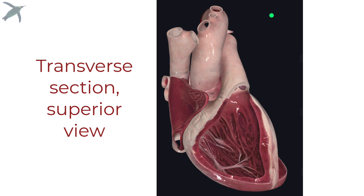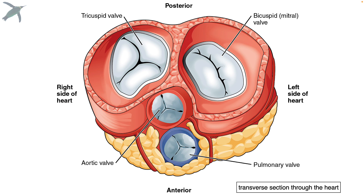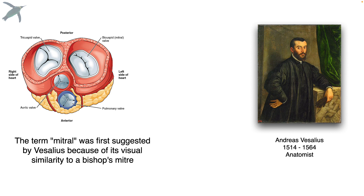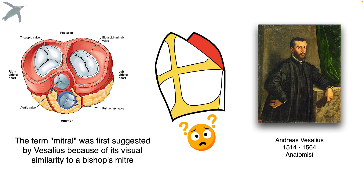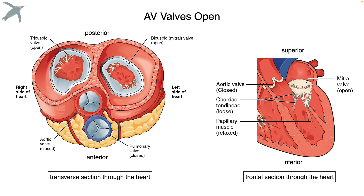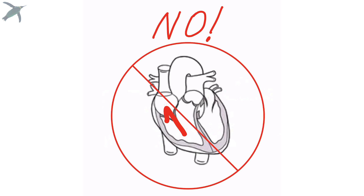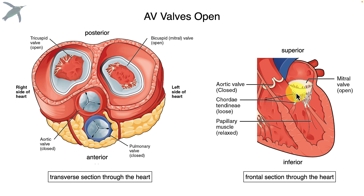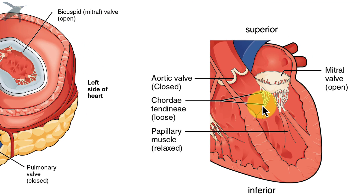We're looking at a transverse section of the heart with all four valves shown. The tricuspid valve on the right side of the heart has three flaps or cusps, sometimes called leaflets, while the bicuspid valve has two. That word 'mitral' — we can thank Vesalius for that; he thought it looked like a bishop's mitre, this pointy hat. Here's something really important about both of the AV valves: they have to withstand a huge pressure gradient, because we don't want blood to flow backwards from the ventricles back up into the atria. We prevent that by anchoring the valve with what are called chordae tendinae.